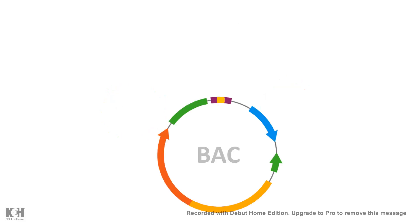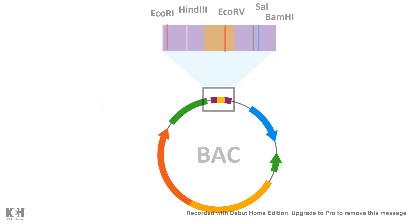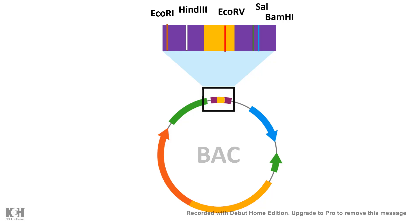Let's quickly go over all the features of the BAC. Like any cloning vector, BAC should also have a multiple cloning site which would have a screenable marker. For example, here in yellow, the screenable marker is LacZ. We will come to how this screenable marker works in a moment, but there are other important features of the BAC vector as well.